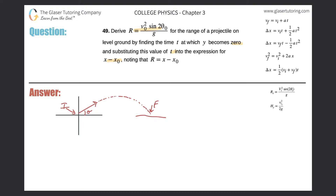In terms of the initial velocity vector, let's call the overall magnitude v. The x-component of that vector is v sub x. The vertical component — the initial velocity in the y direction — can be found by taking the sine of the angle theta, so v_iy equals v times sine of theta.